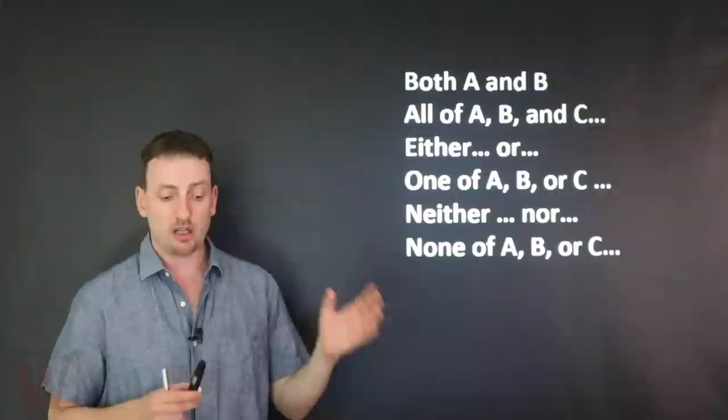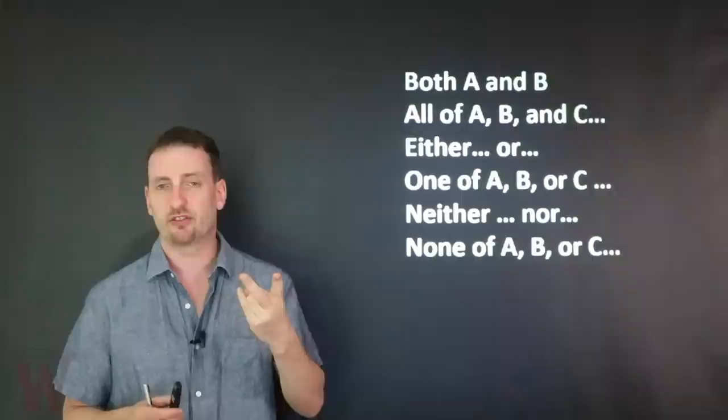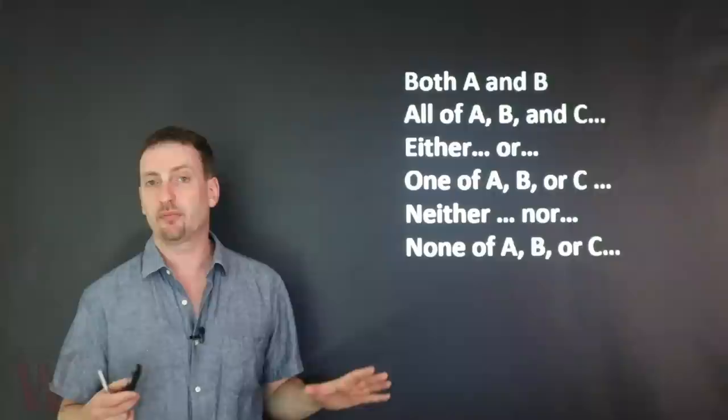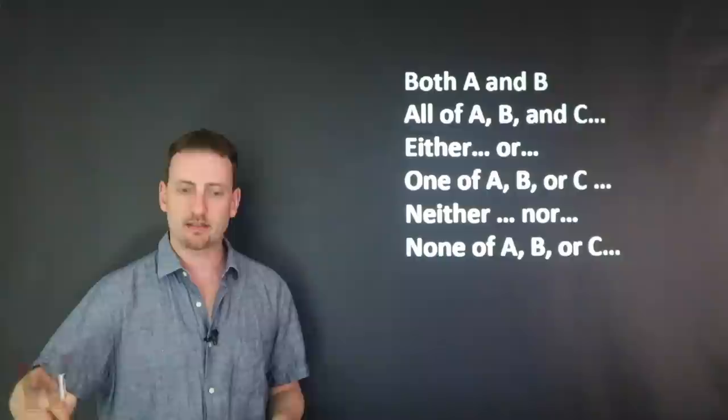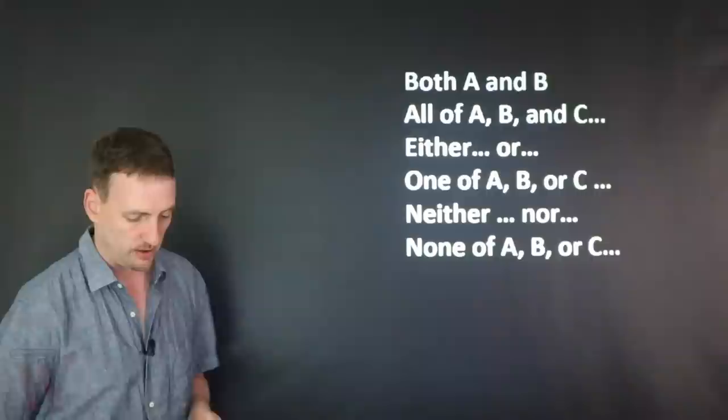Quick note: 'both A and B' — no comma; 'either' and 'neither' also mean two items, no commas. As soon as you want a longer list of three, four, or five items, use a different quantifier and add commas. 'Both,' 'either,' 'neither' take no commas. 'All of,' 'one of,' 'none of' take commas, and your list follows.